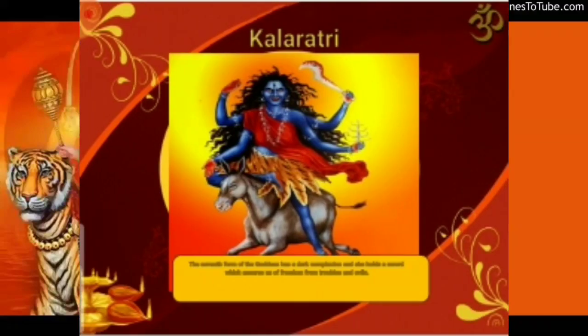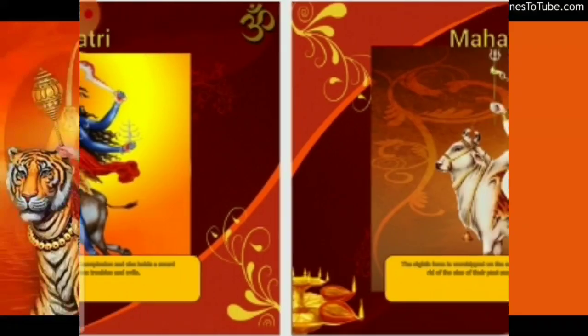Kalratri is the seventh form of Goddess Durga. She has a dark complexion which assures us of freedom from evils.